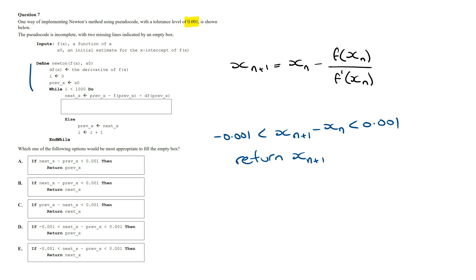Looking at the code, this part is just defining the variables, and this is Newton's method formula. And so inside this box, we need an if statement where the algorithm is going to check to see if the distance between the two estimates is less than 0.001 and then output the next value. And if it's not, it's going to continue the while loop.